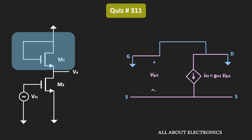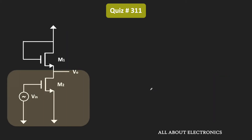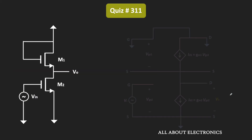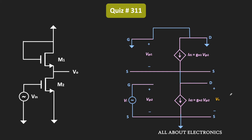Similarly, let us see the small signal equivalent circuit of MOSFET M2. In the case of M2, the small signal equivalent circuit will look like this. There is an input signal between the gate and the source terminal, and the output is measured between the drain and the source terminal. The overall equivalent circuit will look like this.